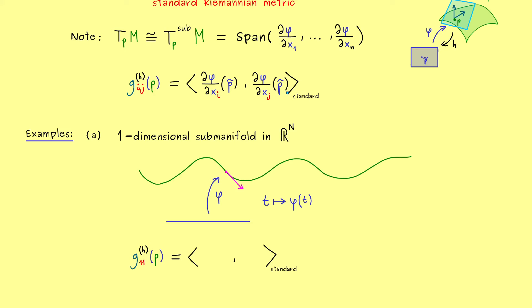It's still given by the standard inner product. But now we don't need partial derivatives, because phi only has one. So to keep it simple, we can just write phi prime of t. And then we can simplify that by writing the norm of phi prime of t. It's the standard Euclidean norm and of course squared.